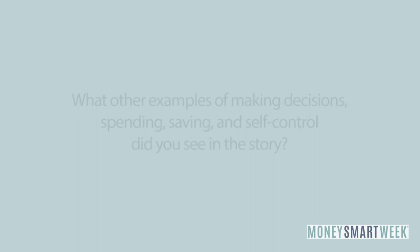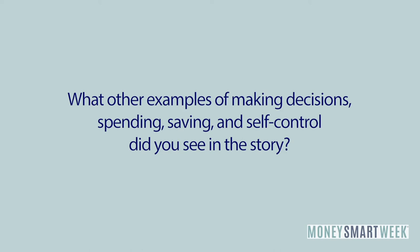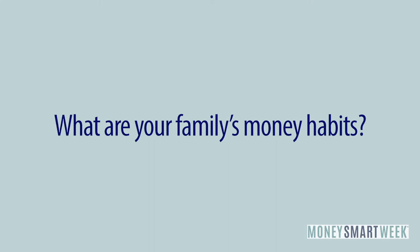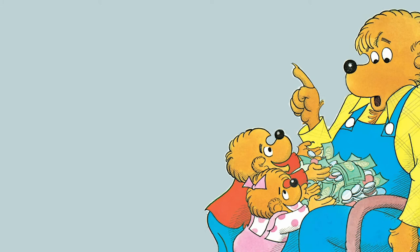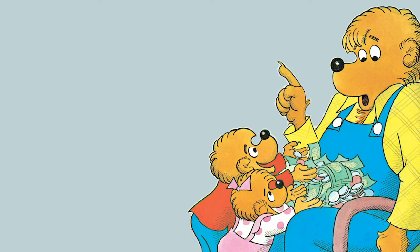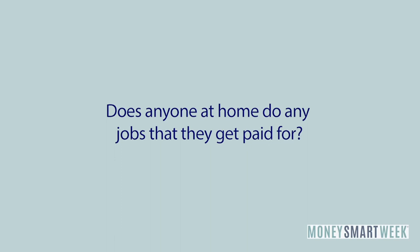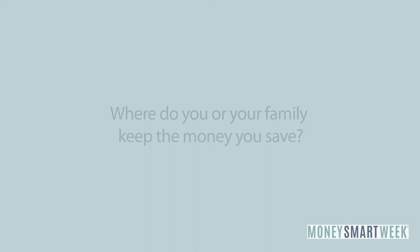We've talked about the Berenstain Bears and their money habits. Now let's talk about your family. Can you think of examples from your own life when you have faced similar situations? Use the following questions to guide you as you think about how these money lessons can apply to your own life. You can pause the video after each question and take time to answer. Does anyone do any jobs that they get paid for? Where do you or your family keep the money you save? What's one thing you or your family would like to save money for? What's a decision you or your family has made about how to use money?